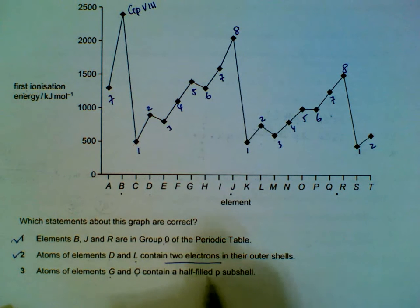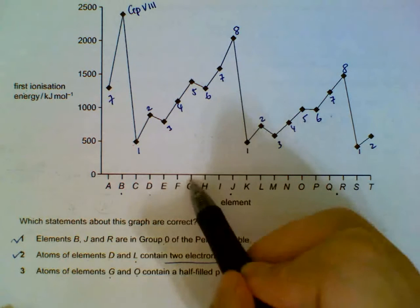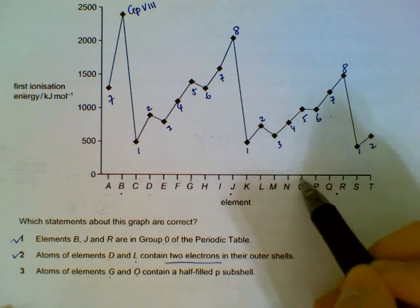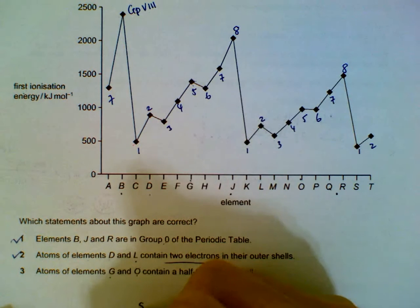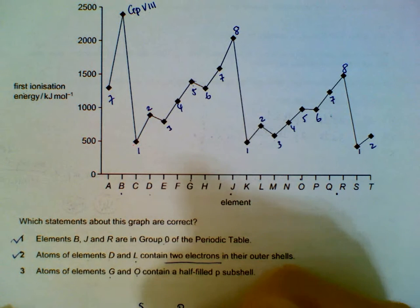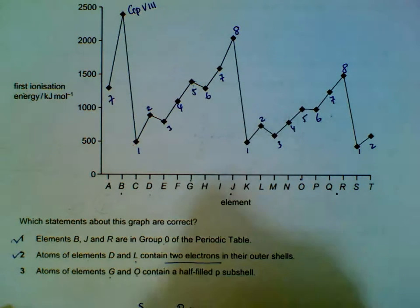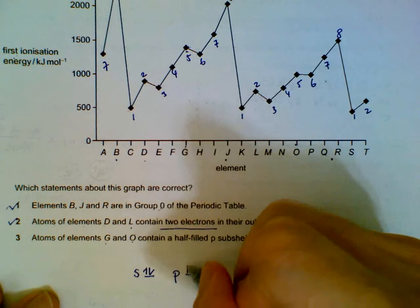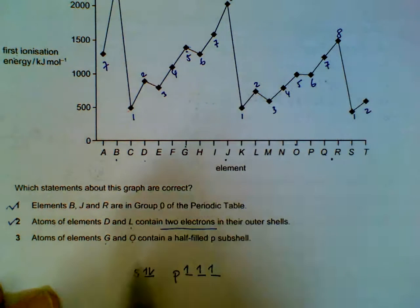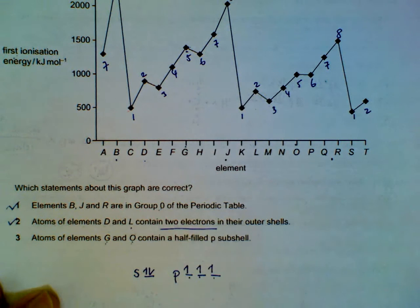Statement 3: atoms G and O contain a half-filled p shell. G is from Group 5, O is also from Group 5. If you are Group 5, you have five outer electrons filling the s and p orbitals, so the p orbital is half-filled. This is also correct. All three statements are correct.